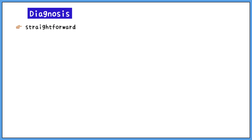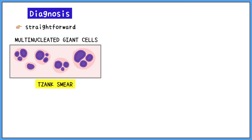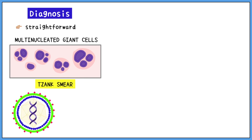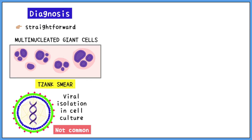Diagnosis of the condition is pretty straightforward because of the characteristic clinical appearance. For confirmation of diagnosis, a Tzanck smear can be used, which shows multinucleated giant cells, just like HSV. Another method that can be used is viral isolation in cell culture, though this is rarely used.